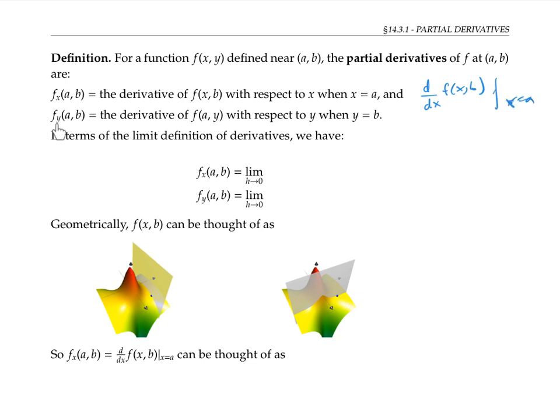When we write f_y(a,b), that means we hold x fixed at a and let y vary. And then we compute the derivative d/dy of this function of y, f(a,y), when y equals b.